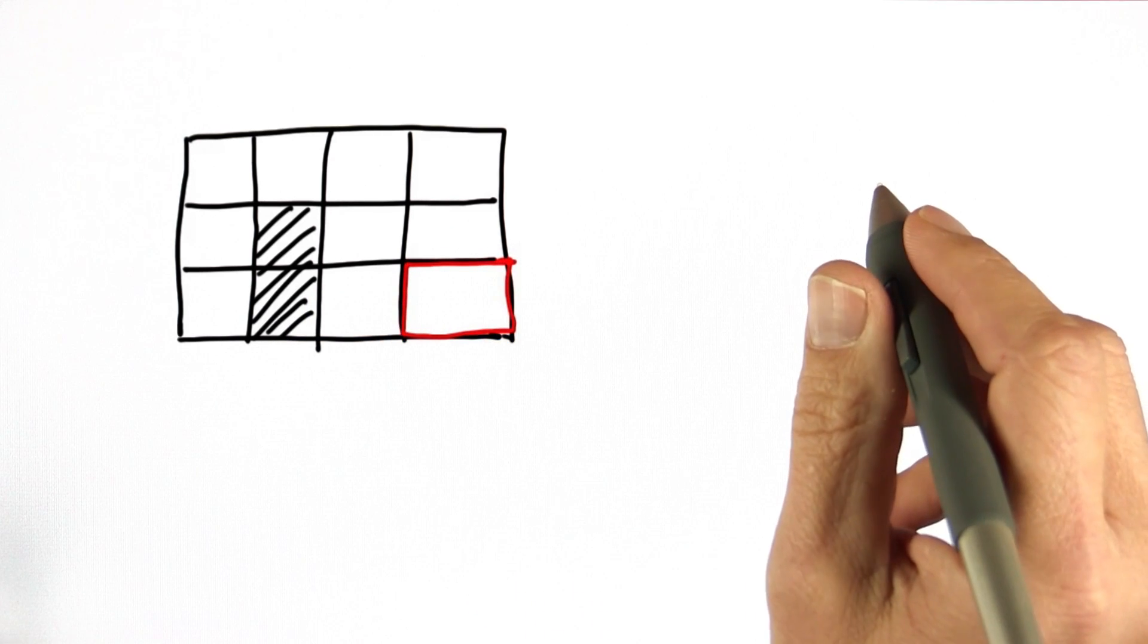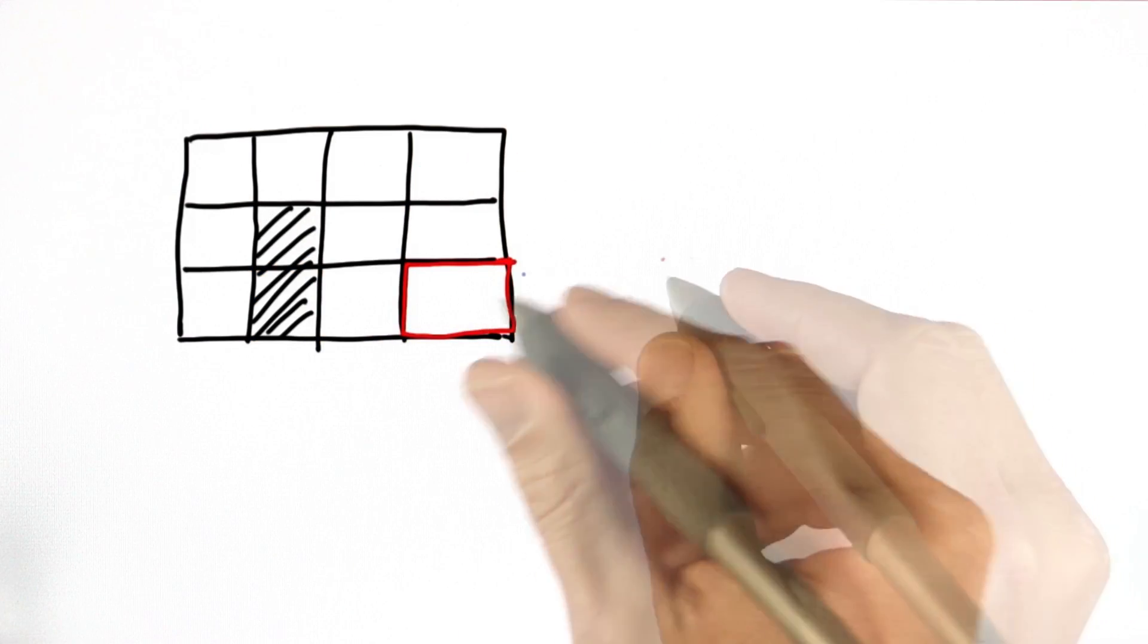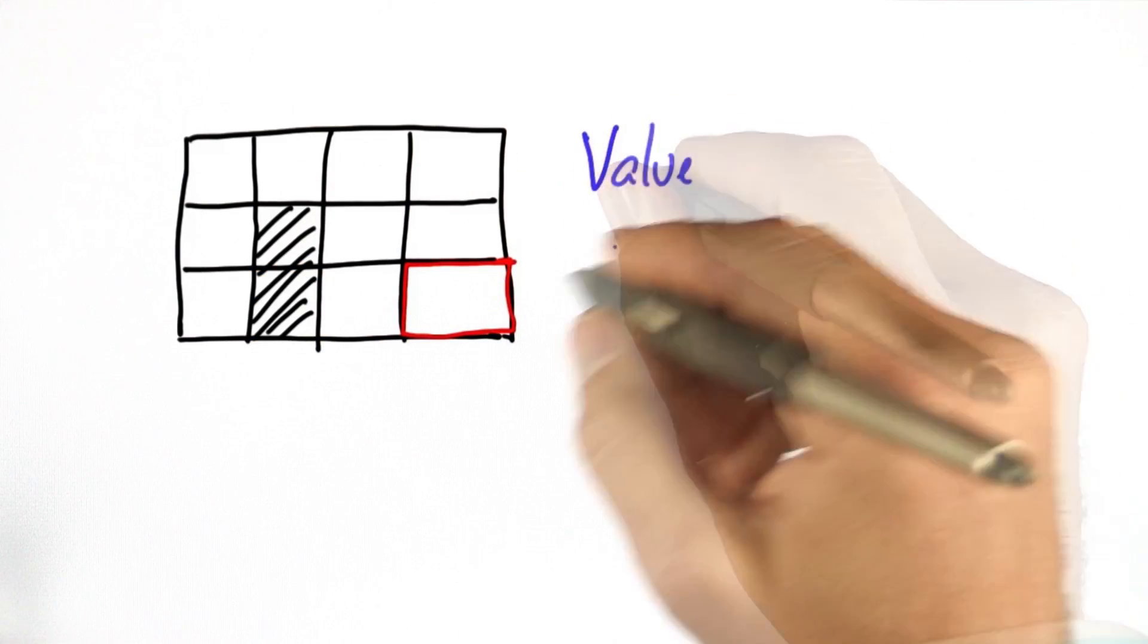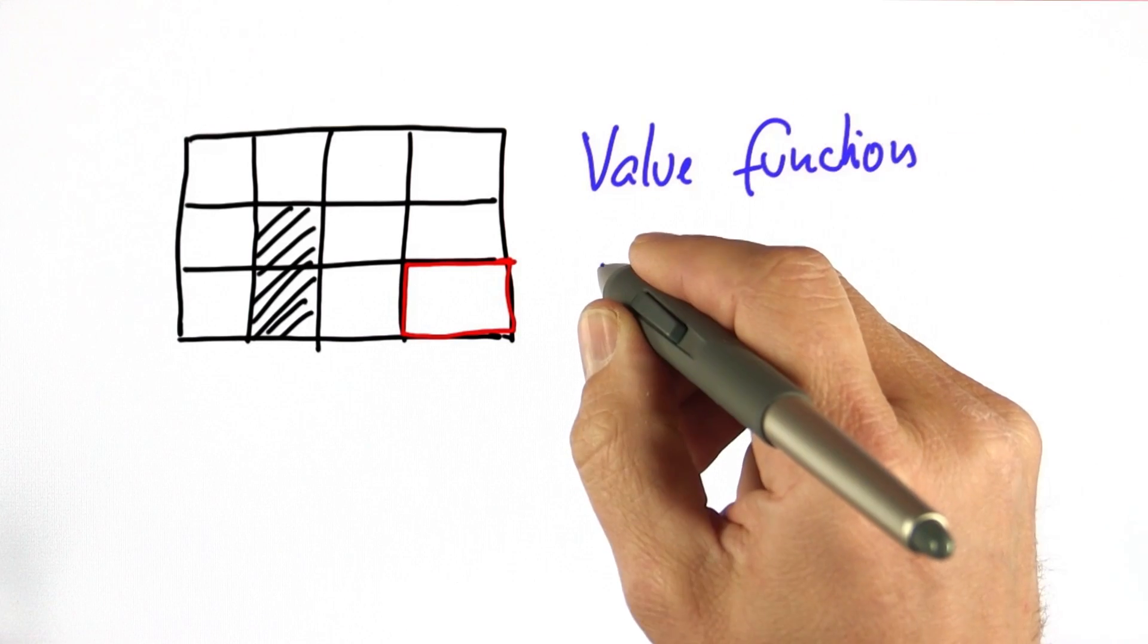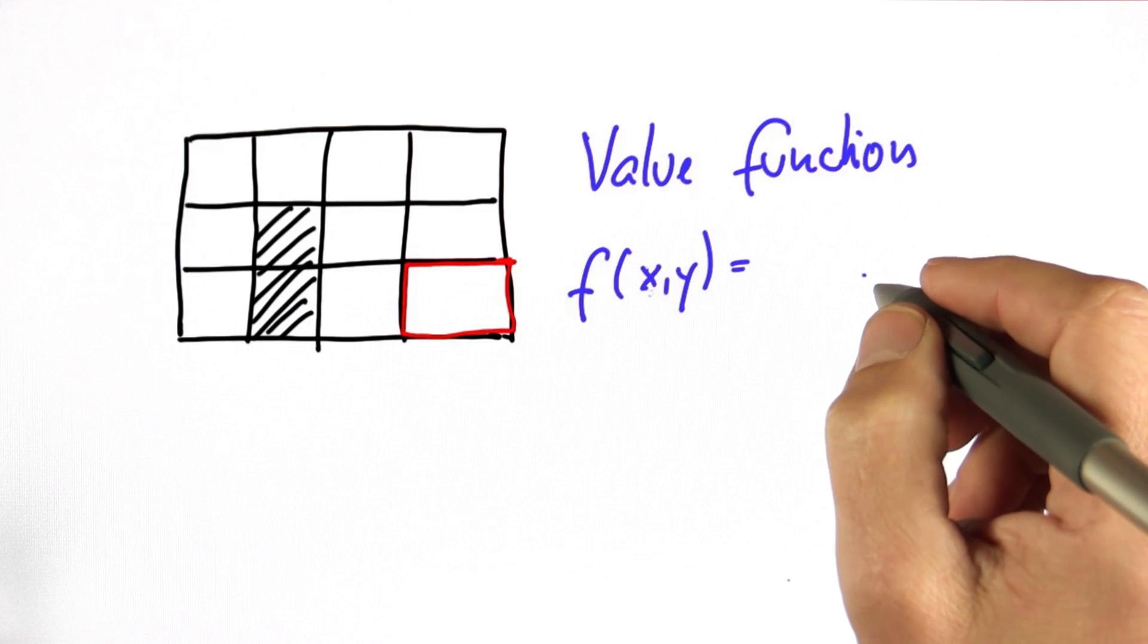Rather than telling you how to compute the optimal policy, which assigns an action to each of these cells, let me instead teach you about value. A value function associates to each grid cell the length of the shortest path to the goal.